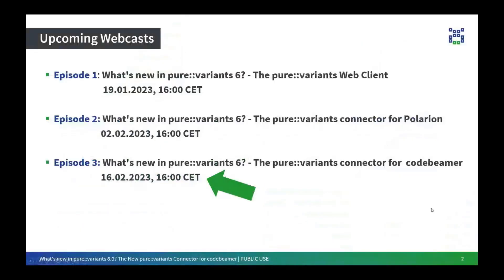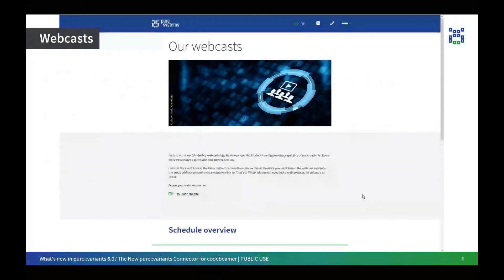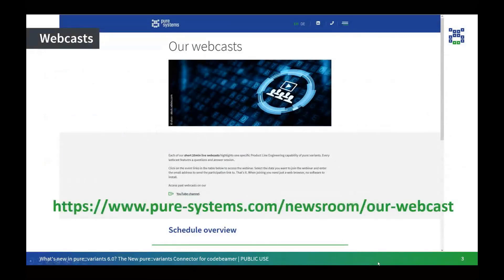This is an overview of all the episodes of the series, What's New in Pure Variance 6.0. Today is the last episode where we look at the new Pure Variance connector for CodeBeamer. Based on a simple example, we will walk you through its capabilities. All the upcoming webcast details will be announced on our website soon, so if you want to register for upcoming webcasts, you can check it out on our website.